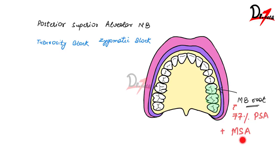It has been found that 28% of specimens examined had middle superior alveolar innervation. So in such cases, after giving the PSA nerve block, we may need to give a supraperiosteal nerve block. Apart from these teeth, the buccal periodontium and the bone overlying these teeth are also anesthetized.